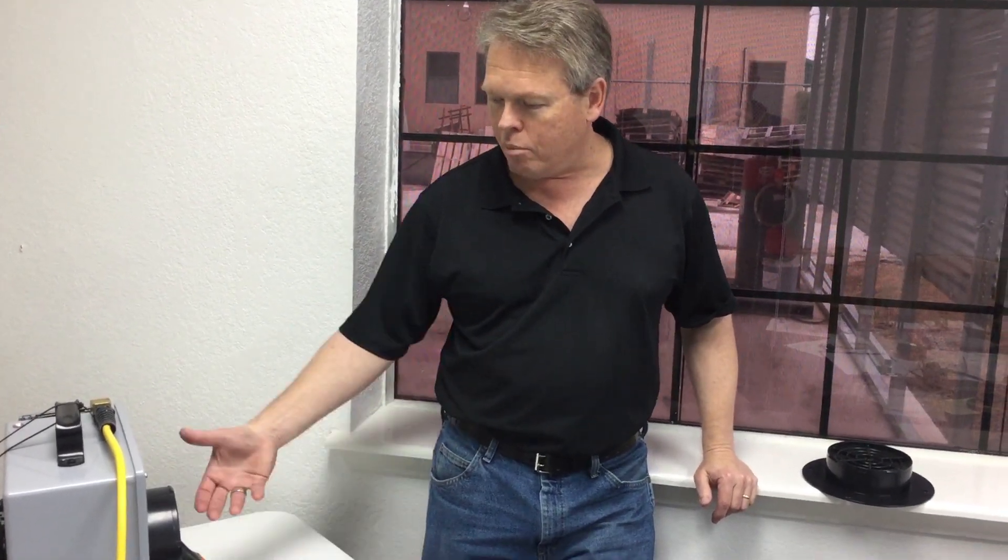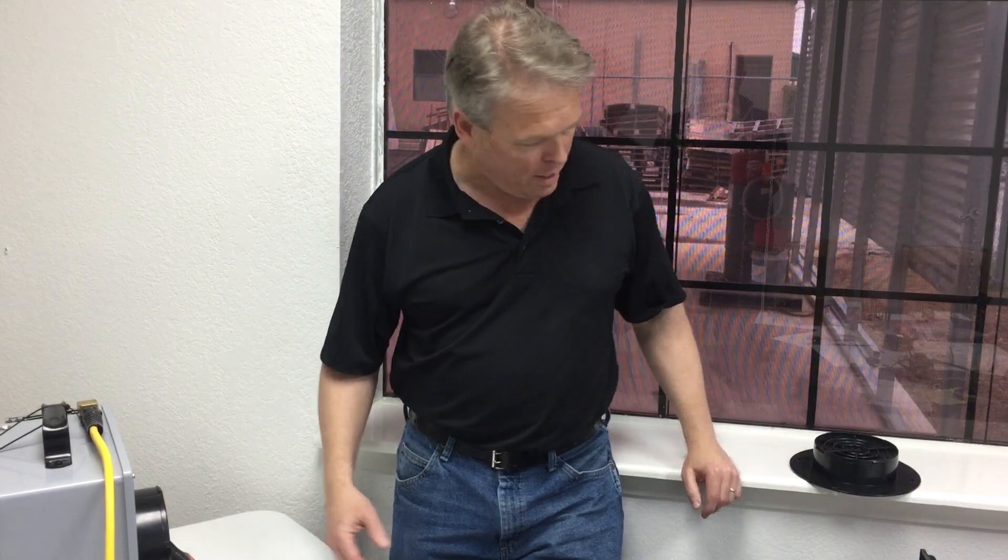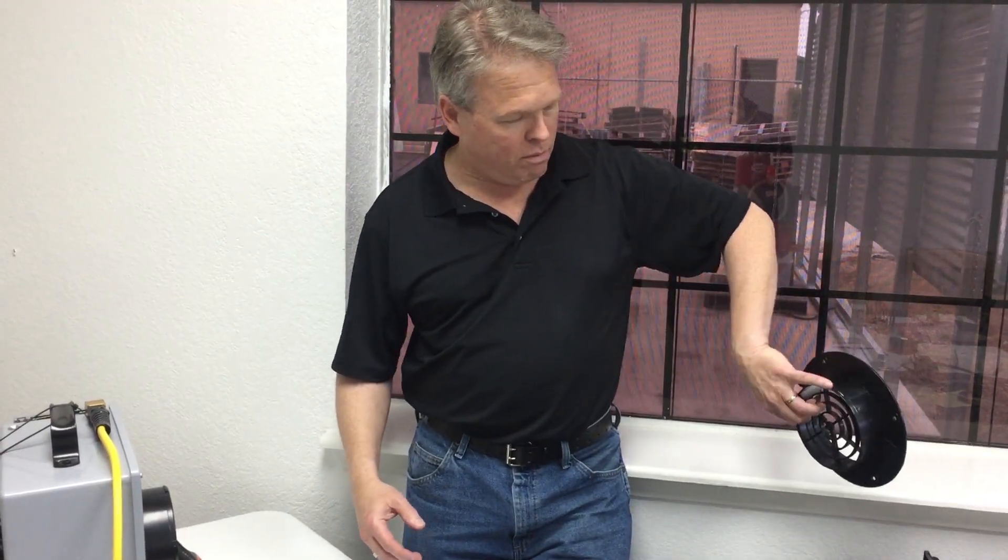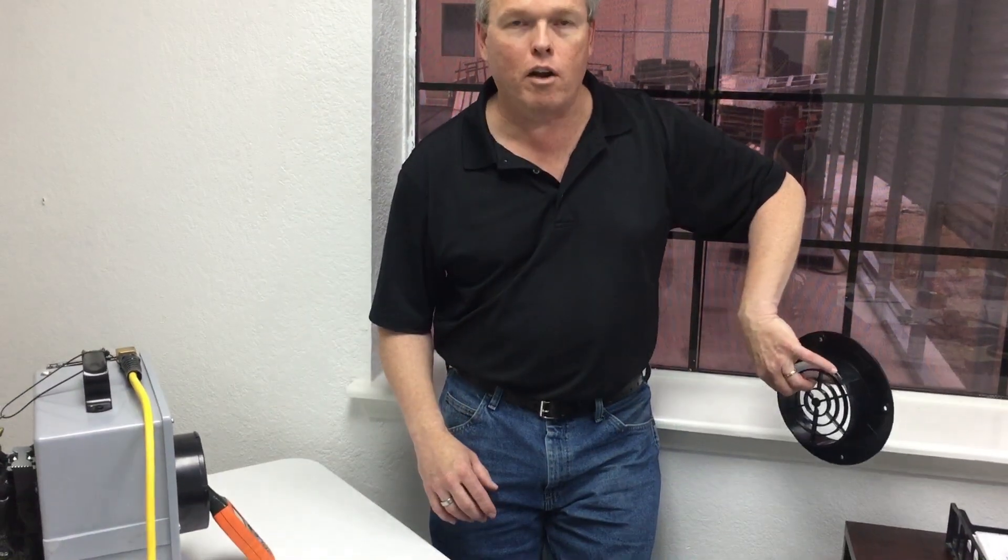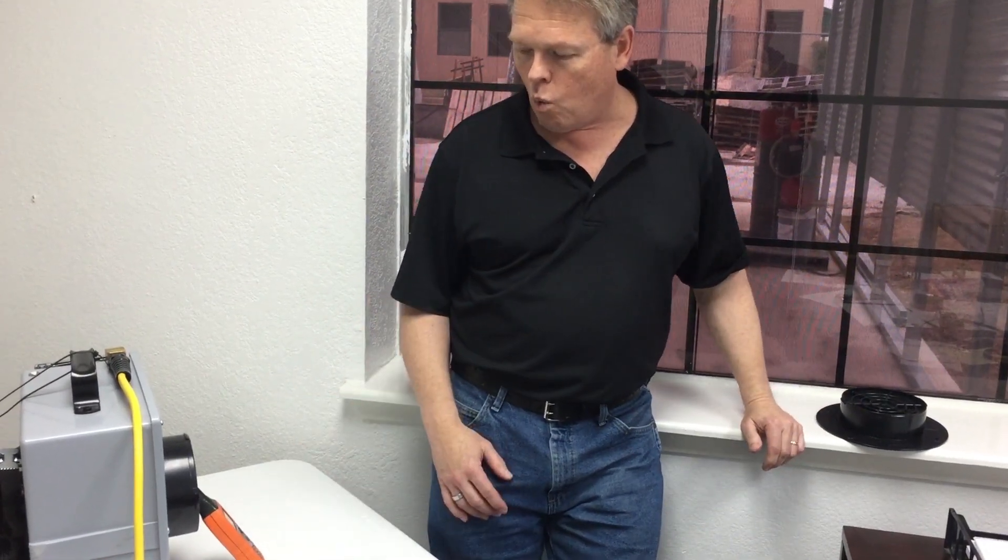You could even pipe this inside of a car if you needed to dry the inside of a flooded car. Again, you could also pipe it right to the intake of an air mover. A lot of different possibilities if you have a wall pressurization machine you could actually pipe it right to that.